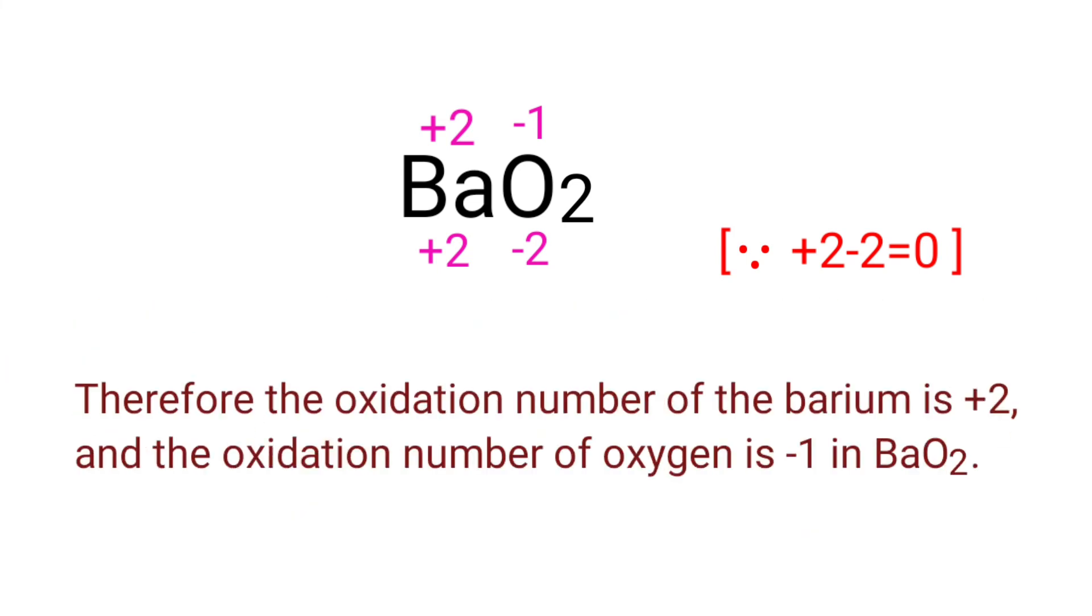Therefore, the oxidation number of barium is plus 2 and the oxidation number of oxygen is minus 1 in barium peroxide.